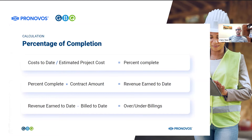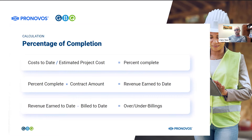I take 50% complete times my contract amount. Let's say I think I can sell my rocking chair for $20. So I take $20 times 50% complete and I've actually earned revenues of $10. I compare that $10 of earned revenue to what I've billed so far. In this case I've billed nothing, so I have an under billing of $10 because I've earned $10 and billed nothing.